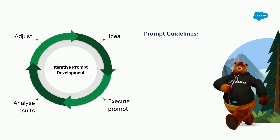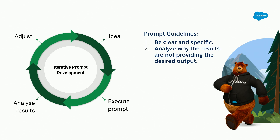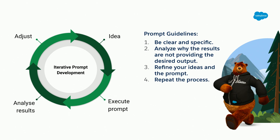The high-level guideline is to be clear and specific. AI is not your new best friend — you do not have to be nice to AI. Be precise. Then if the results are not working for you, think why. Maybe you were not specific enough, maybe you used misleading words. And then refine and repeat. It's as simple as that.